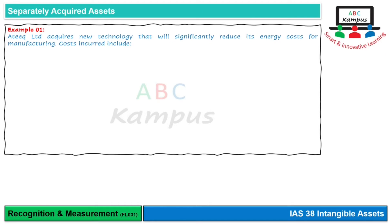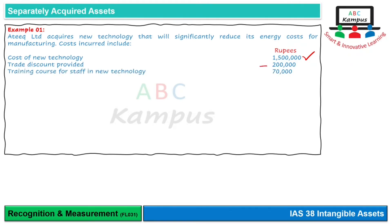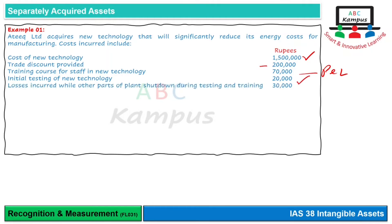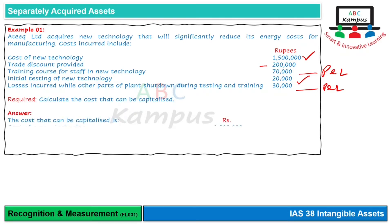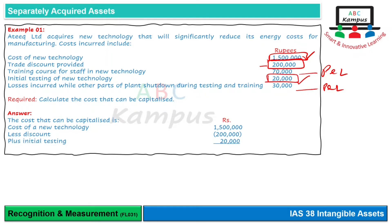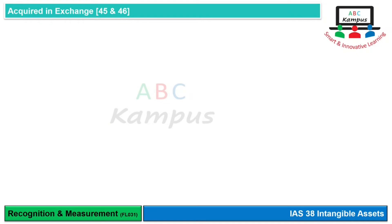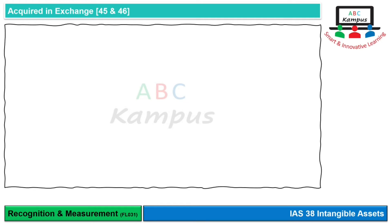Example: Atik Limited acquires new technology that will significantly reduce its manufacturing energy costs. Costs incurred include: the cost of the new technology — this should be capitalized; a trade discount provided — this should be deducted; a training course — this should be charged to profit or loss; initial testing of the new technology — this should be capitalized; and losses incurred while other parts of the plant were shut down during testing — this goes to profit or loss as there is no direct attribution to the asset's development.